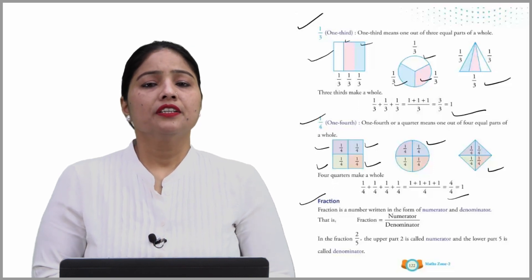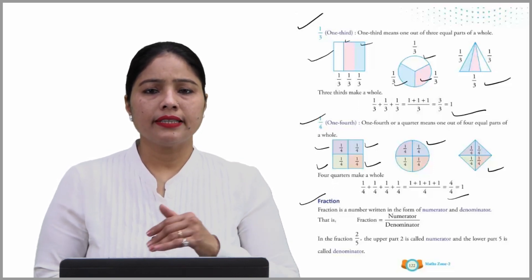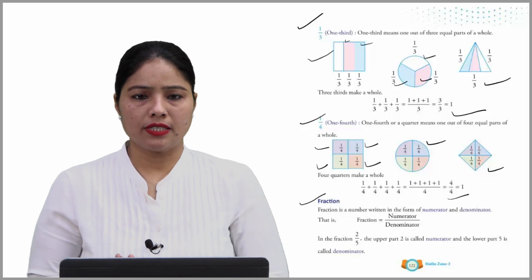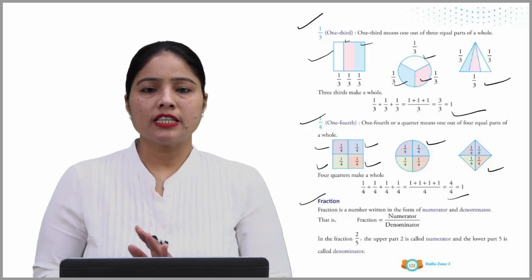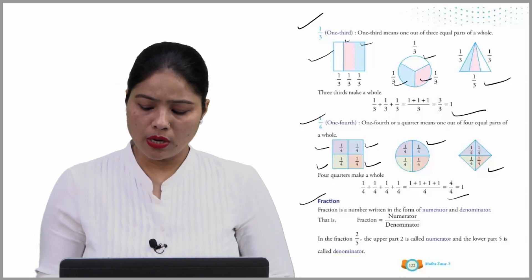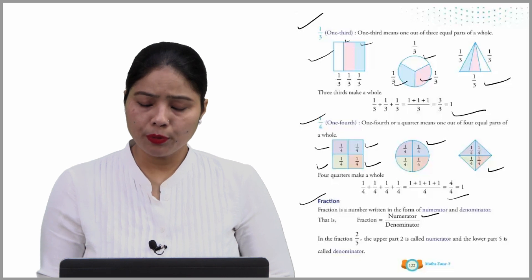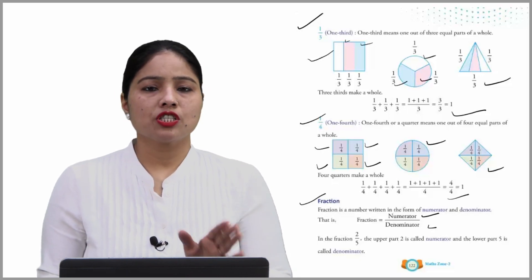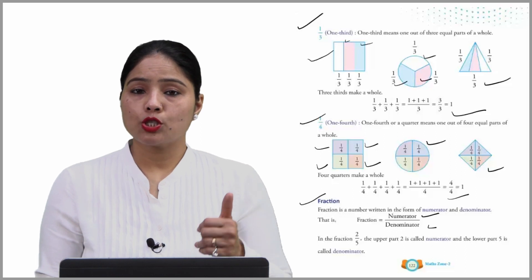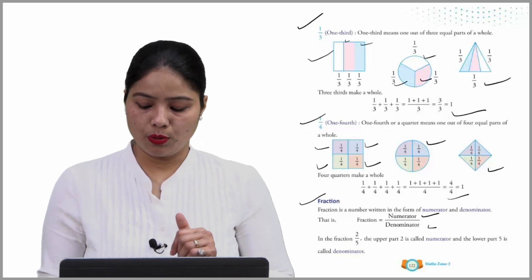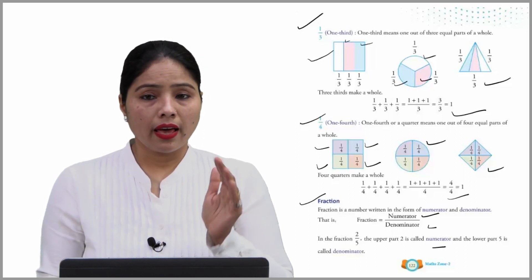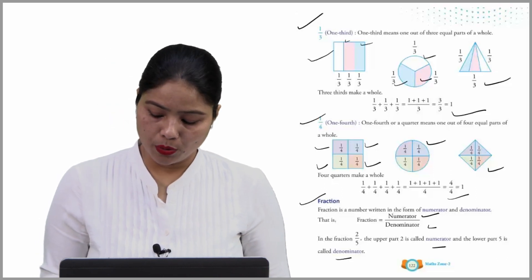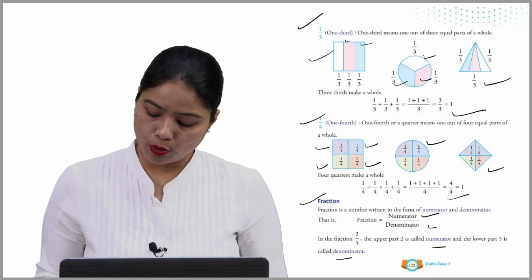Fraction is a number written in the form of numerator and denominator. That is, fraction होता है numerator and denominator. In the fraction two by five, the upper part two is called numerator, and the lower part five is called our denominator. I hope you understood.